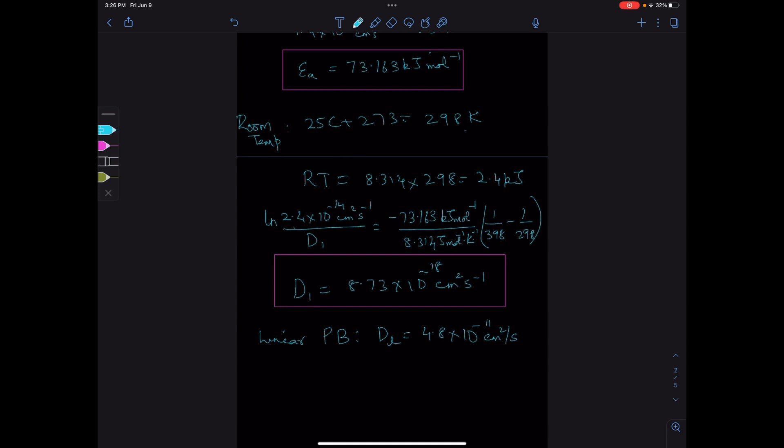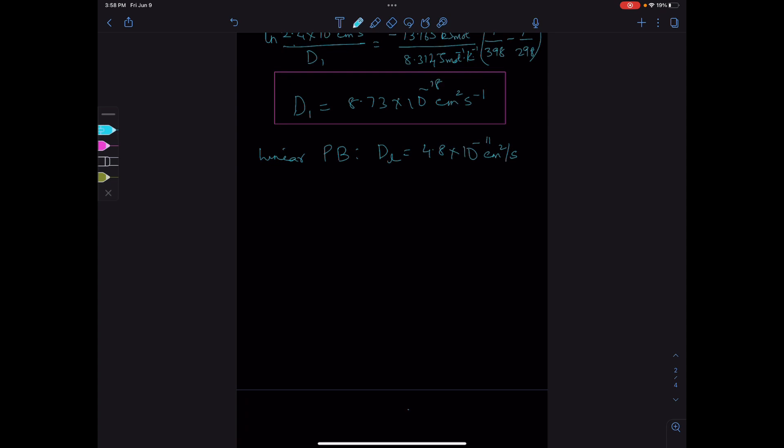Let's find the activation energy for the linear polymer, assuming the Arrhenius constant is the same. Ea for the linear polymer equals Ea for the star polymer plus ln(D_star/D_linear).